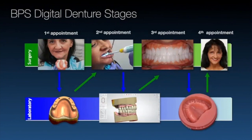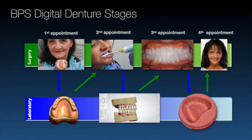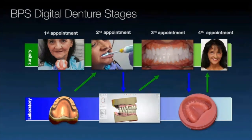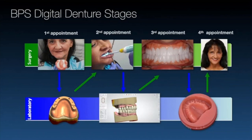Then it goes back to the lab, gets scanned, and a digital try-in is done. We can do a monoblock try-in — printed in acrylic. With wax try-ins, the problem is wax warms up, gets softer, and patients can't eat or drink with them. With the monoblock try-in, it's essentially a one-to-one copy of the final denture but in acrylic, so patients can take it home, eat with it, and test the suction.